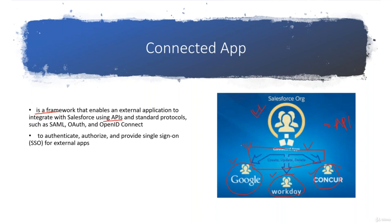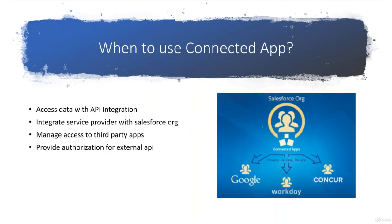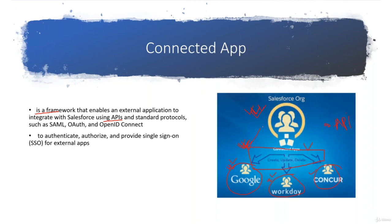So what is Connected App going to do for us? It's simply going to authenticate, authorize, and provide Single Sign-On to my external apps. Whatever the external applications or external APIs want to communicate to my Salesforce org — to authenticate them, authorize what they can do on my system, or to build Single Sign-On — I can use Connected App. In the previous example I was able to integrate two systems, but I didn't use any Connected App.